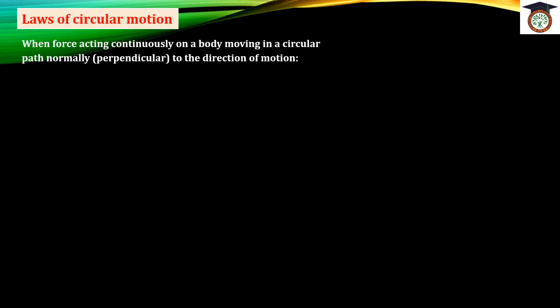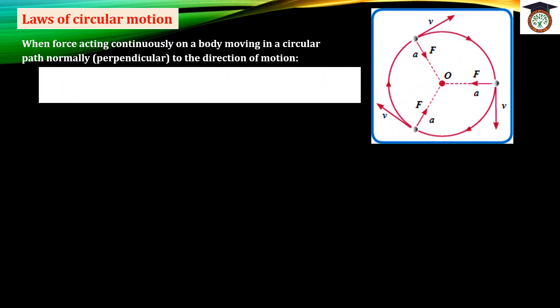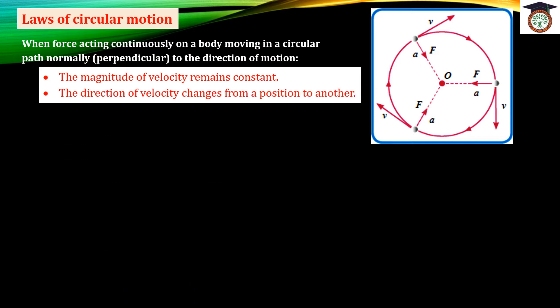In this part we are going to talk about Laws of Circular Motion. When a force acts continuously on a body moving in a circular path, normally or perpendicular to the direction of motion, the magnitude of velocity remains constant — the value of velocity doesn't change — but the direction of velocity remains changing during the path of the object.